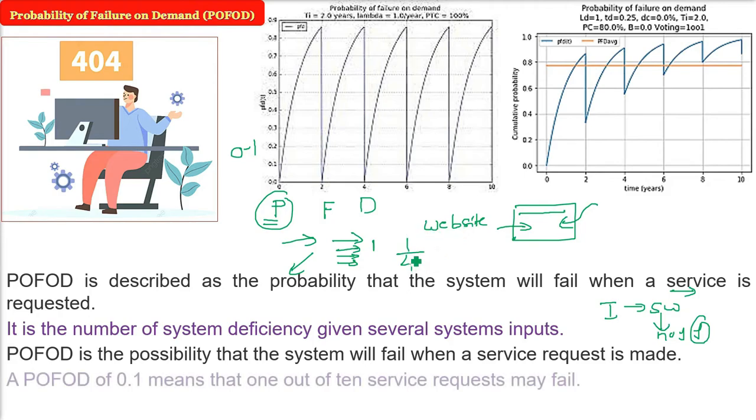I will give you one more example. If POFOD is 0.1, what does it mean? That 1 out of 10 service requests may fail, likely to fail.